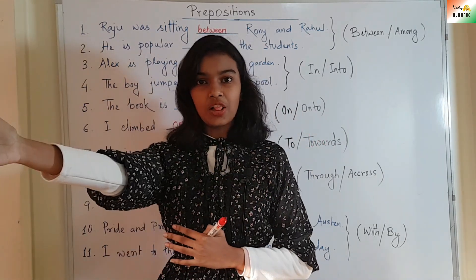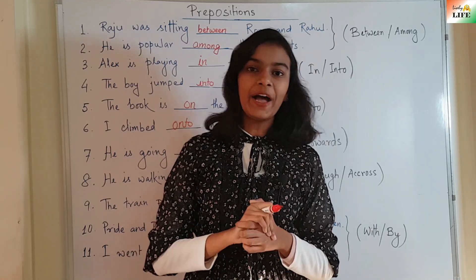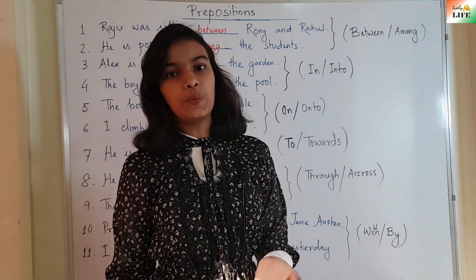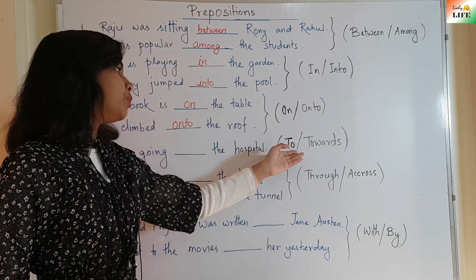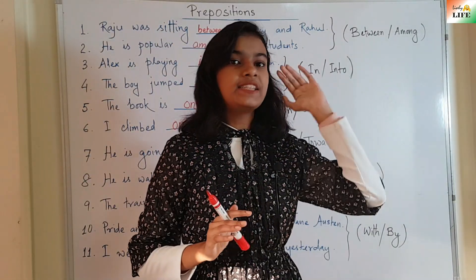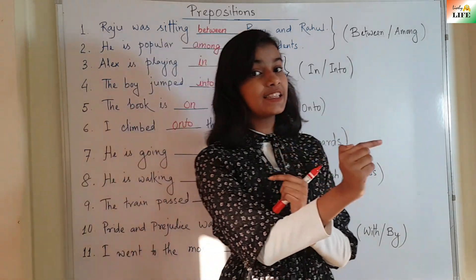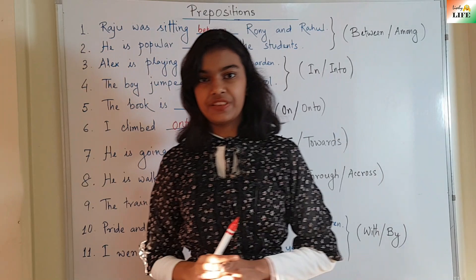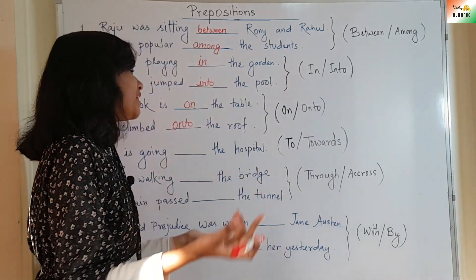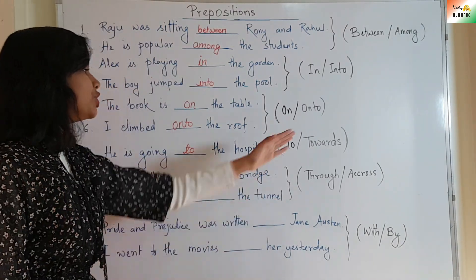I am walking towards the mall means I am just walking in the direction of the mall, not necessarily going to the mall. He is going — the hospital. We can use 'to' and 'towards' here. He is going to the hospital means the hospital is his main destination. But he is going towards the hospital means he is not visiting the hospital — he is just going in the direction of the hospital. Both are possible here, but they have different meanings.